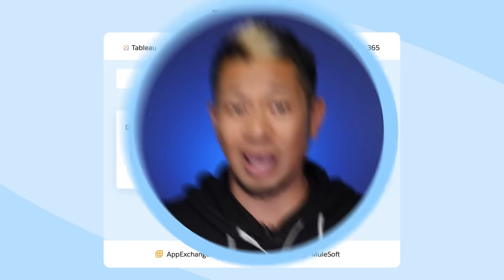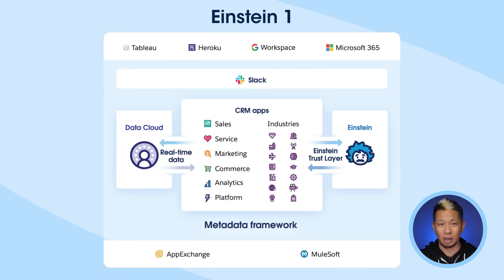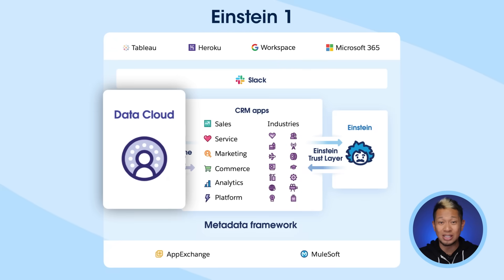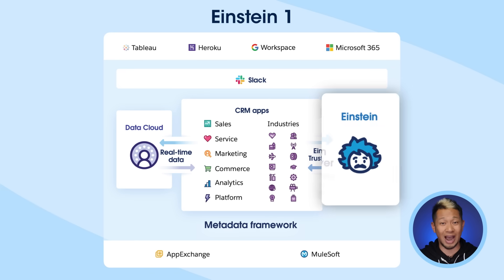It's absolutely essential for — you guessed it — AI, because AI is only as good as the data that goes into it. That's what makes Salesforce's native AI, Einstein, such a powerful AI model.